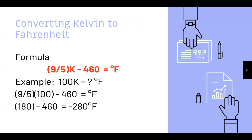Converting Kelvin to Fahrenheit: (9/5 × K) − 460 = °F. Example: 100 K — 9/5 × 100 = 180, then 180 − 460 = −280°F.